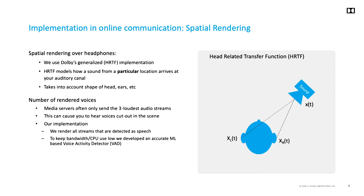Implementing this in conferencing has a few considerations. When we first started, we used N loudest mixing — always N equals three, mixing the three loudest voices. The problem is when you have four voices and one is cutting in and out while spatially rendered, it's quite disturbing. So we had to redesign the audio chain to mix all voices. We spent a lot of time on the noise suppression algorithms and also the VAD — voice activity detector.